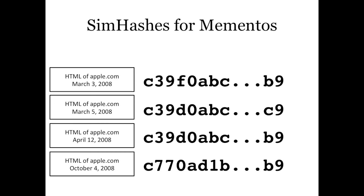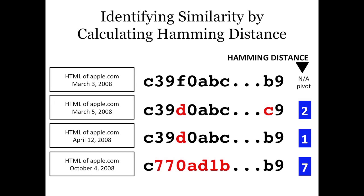For these four different mementos from apple.com, you can see subtle differences. If we have a threshold of differences — we call it a Hamming distance — that's merely the count of character changes between two strings. Using the first memento as a pivot: the second memento from March 5, 2008 shows two character changes, but that's not enough to pass our threshold of four characters changing in a 64-bit SimHash to warrant inclusion. The third memento shows only one character changed from the pivot. But on October 4, 2008, the SimHash has changed drastically — that would be the first memento included in the summary beyond the pivot.